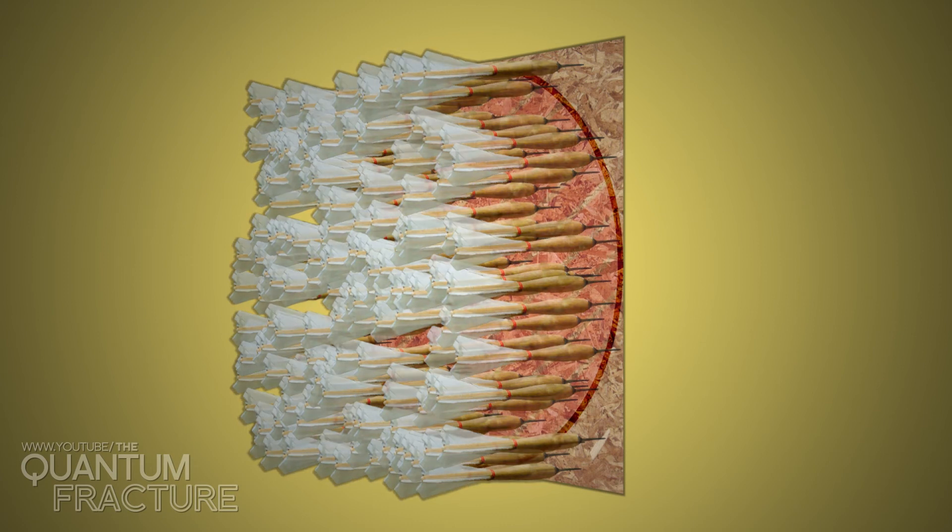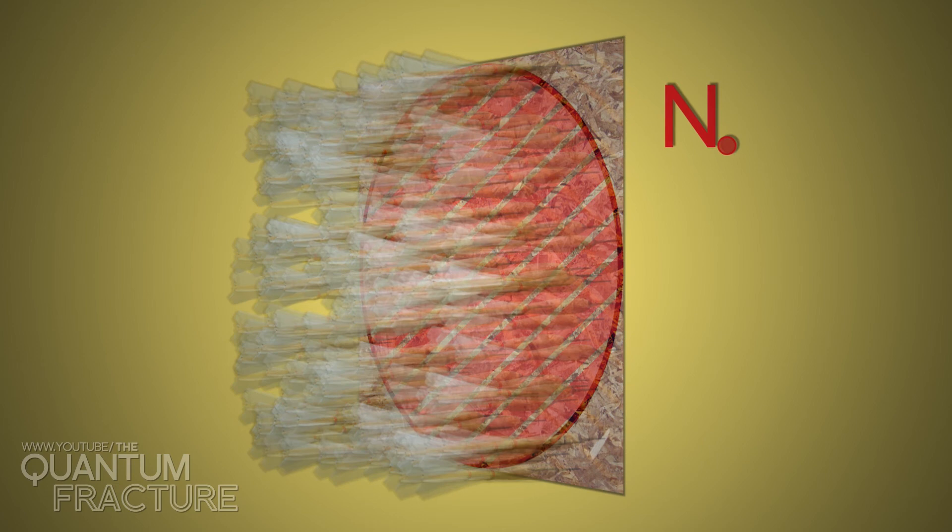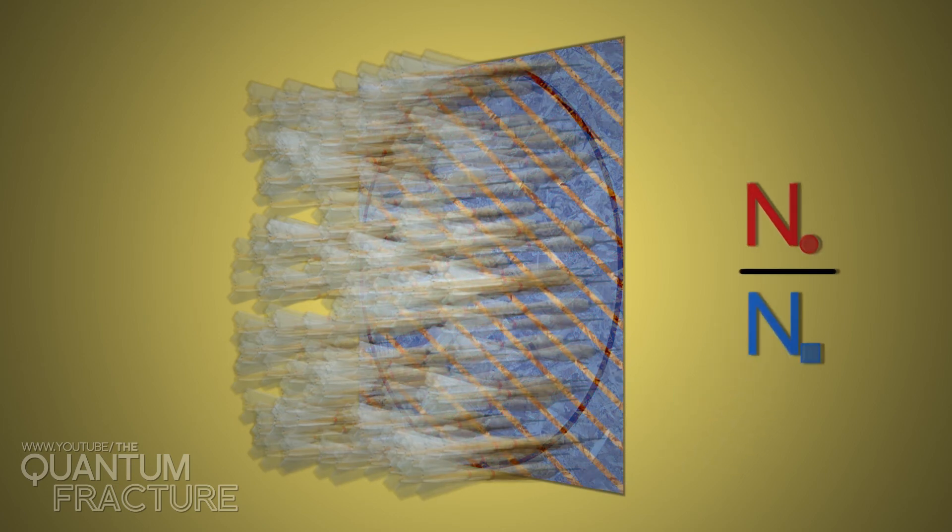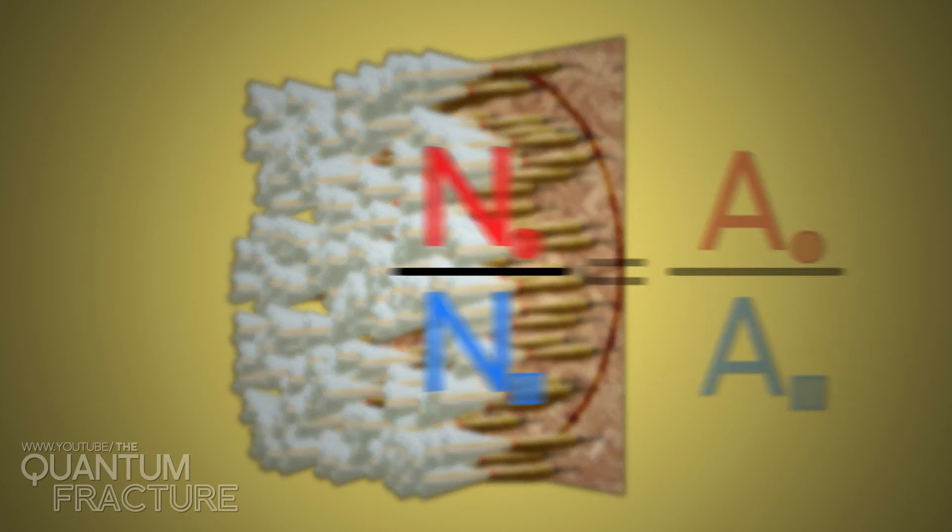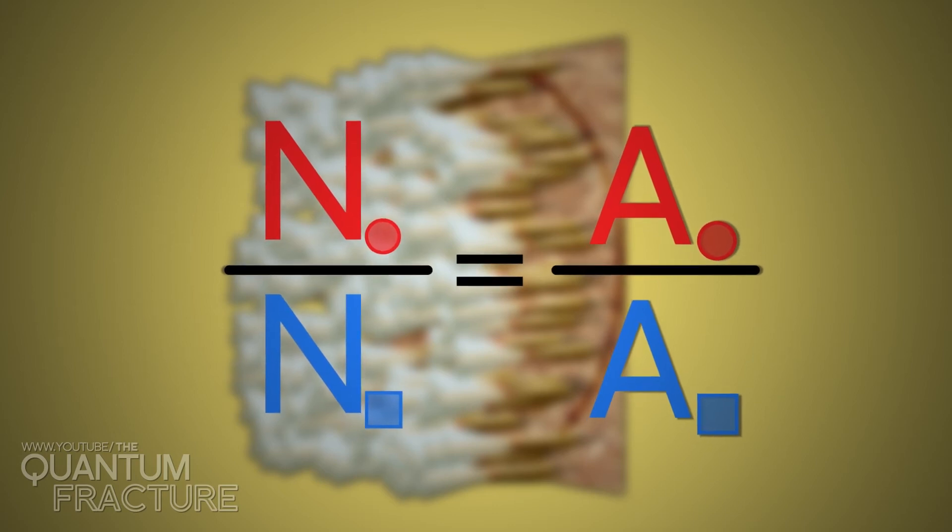If I count how many darts are inside the circle and how many are inside the square, and then I divide these quantities, I'll obtain the same proportion I would obtain if I was dividing the areas.